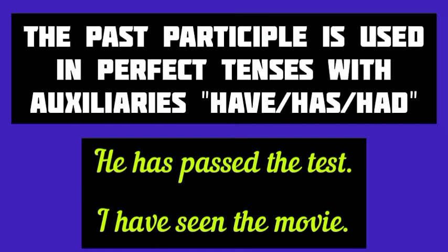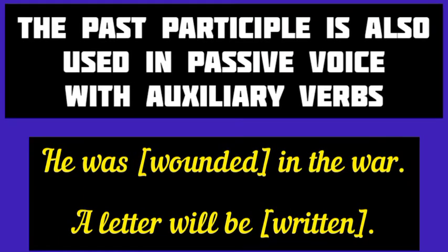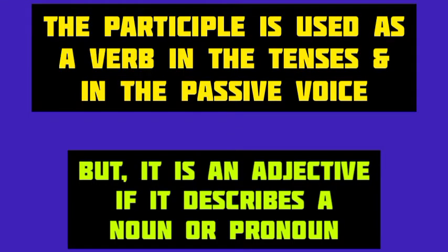We understand that the participle functions as a purely non-finite verb when used in the tenses. The past participle or the third form of the verb is also used in the passive voice with the auxiliary verb be. He was wounded in the war — here, wounded is the past participle of wound used in the simple past tense passive voice. A letter will be written — written is the past participle of write, used in the passive voice of simple future tense.